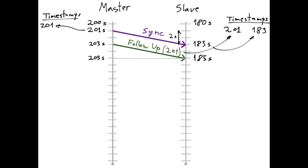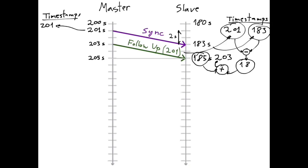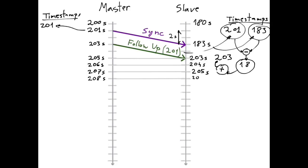This is achieved as follows. Basically, the slave calculates the difference between the two timestamps, which in this example gives a result of 18, and then takes that result and adds it to the current value of its own clock, which in this example yields 203 seconds. This value of 203 seconds is then the corrected clock value for the slave, although without yet taking into account the propagation delay. This means that the clocks of the master and the slave are now almost synchronized — the only difference between the two is an offset of two seconds, which corresponds to the propagation delay.